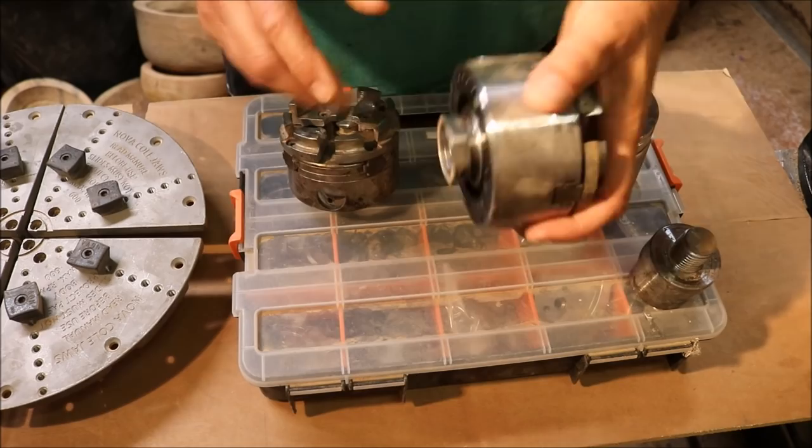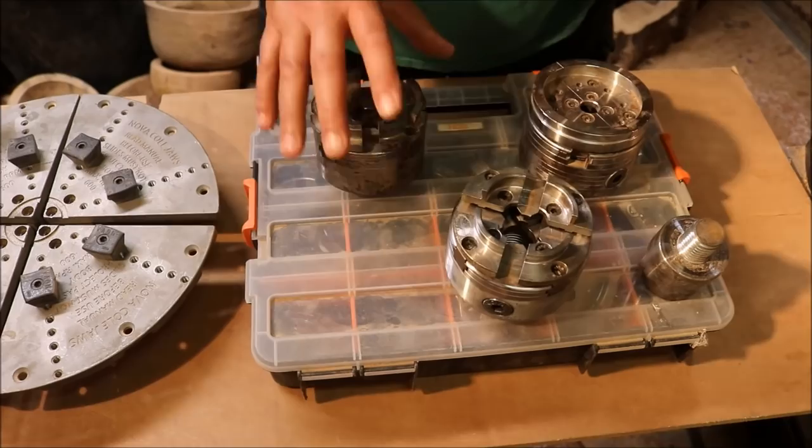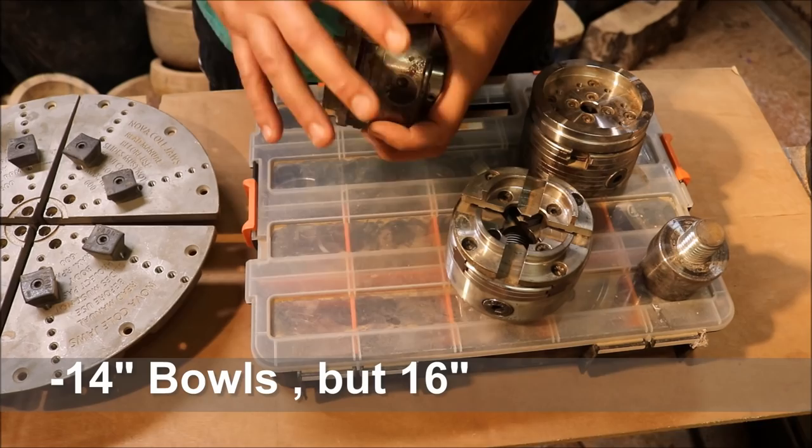This is a Supernova 2. I have two of these. Now the G3 is normally for bowls that are going to be 12 inches in diameter and less.